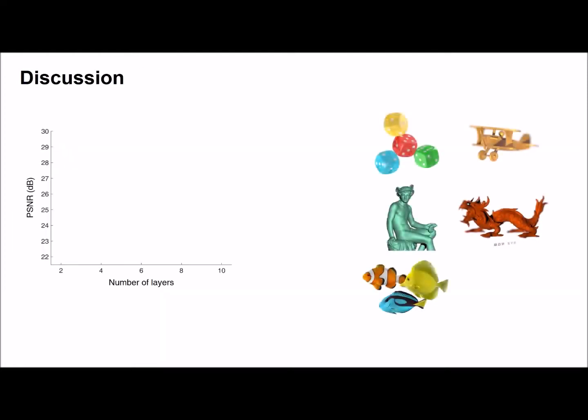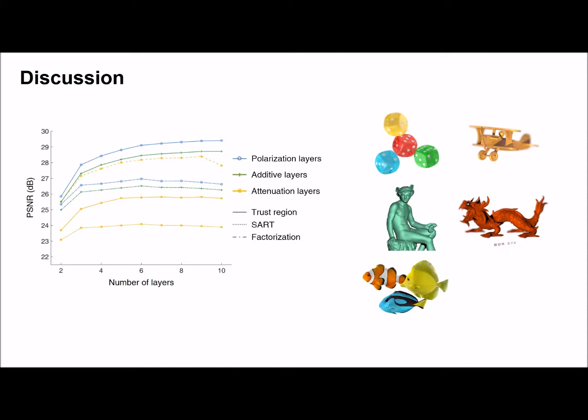Utilizing 5 target light fields we estimate average PSNRs according to the number of layers. The additive light field display shows intermediate display performance among the compressive displays. We employ different optimization methods and compare the results. When trust region or SART algorithm is used, the additive light field display surpasses attenuation-based display. When factorization algorithm is applied for attenuation-based display, the display performance is improved.